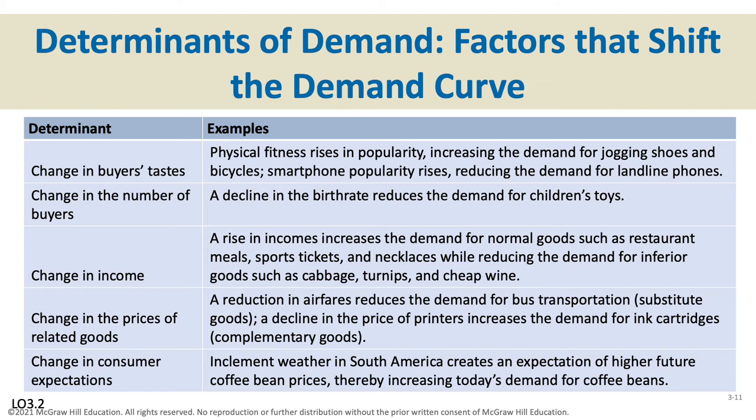There are five determinants of demand: change in buyers' taste and preferences, change in the number of buyers, change in income (you must know if it's a normal or inferior good), change in the price of related goods (substitute or complementary), and change in consumer expectations. If any one of these changes, the demand curve shifts right — meaning at all possible prices, people wanted to buy more — or shifts left if they wanted to buy less.